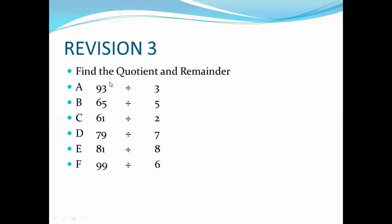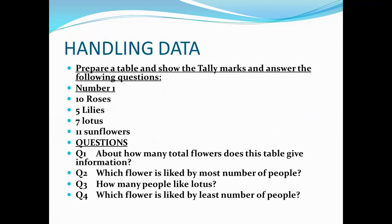For revision 3 we've got a few questions: find the quotient and remainder. The first one is 93 divided by 3, 65 divided by 5, 61 divided by 2, 79 divided by 7, 81 divided by 8, and 99 divided by 6. For those sums you need to divide correctly, write the tables at the side, and also write the answer as quotient and remainder.